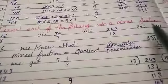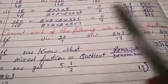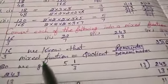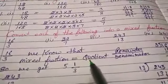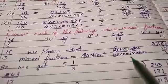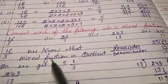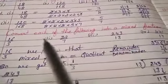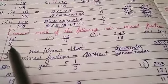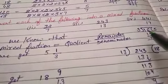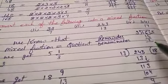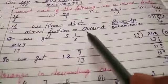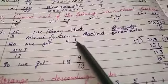Next question is convert each of the following into mixed fraction. The formula is quotient, remainder upon denominator. When we divide 16 by 3 we get quotient 5, remainder 1. So we get 5 whole 1/3 as your answer.